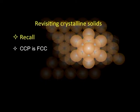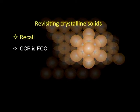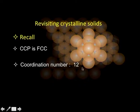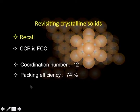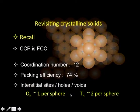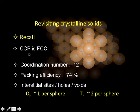You will also recall that CCP — cubic close packing — is actually equivalent to face-centered cubic structure. In such a structure, the coordination number is 12, that is each atom is surrounded by 12 neighbors. In a CCP, 6 will be in the same layer, 3 will be above it, and 3 will be below. The packing efficiency of such packing is about 74 percent. In such packing, since spheres are packed together, there are certain kinds of holes called interstitial sites or voids. There is about one octahedral void per sphere and there are two tetrahedral voids per sphere in CCP or FCC structure.